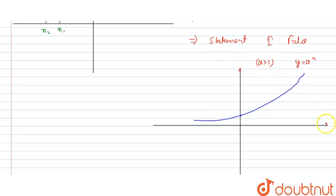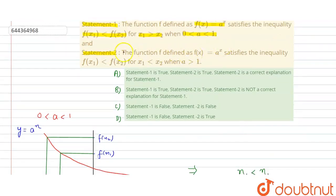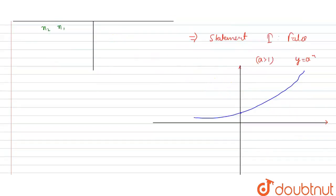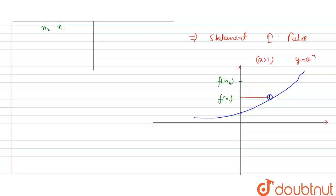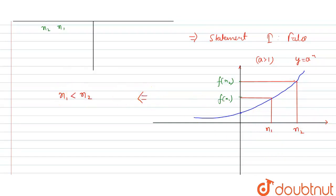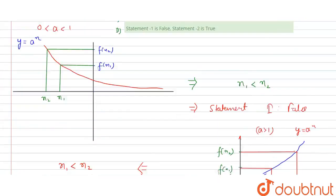The condition given is f(x1) is less than f(x2). Taking the values on the x-axis, we find x1 and x2 from the graph. We can see that x1 is less than x2, and Statement 2 also says x1 is less than x2 — so Statement 2 is true.